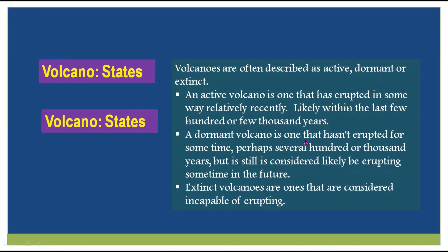A dormant volcano is one that hasn't erupted for some time — perhaps several hundred or thousand years — but is still considered likely to erupt sometime in the future. Dormant is like a sleeping position. Those volcanoes erupted in the past, but at the moment they are inactive — dormant, in a sleeping position — though it is likely that they will erupt again.